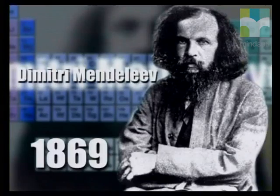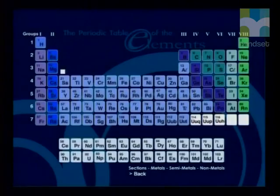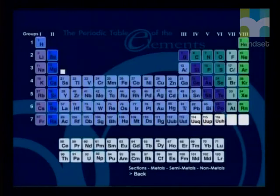Do you remember that the periodic table was originally designed by Dimitri Mendeleev? He showed how the elements can be arranged in groups with similar properties. He noticed that the chemical and physical properties of elements follow a pattern that is repeated in a regular or periodic way. He called this idea the periodic law, and his table of elements was called the periodic table.